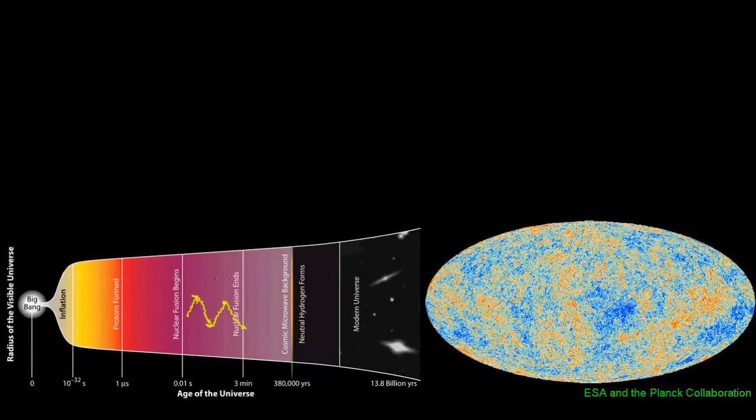However, as the universe expanded and cooled, the protons and electrons that made up this plasma began to bind together to form neutral hydrogen. And this no longer interacted with the light, so at that point, the universe became transparent.